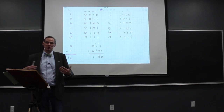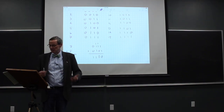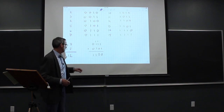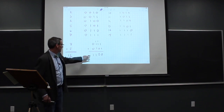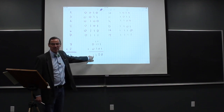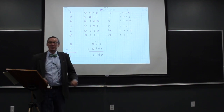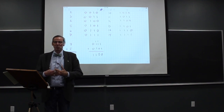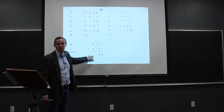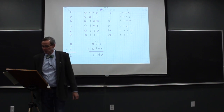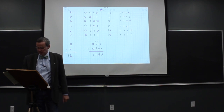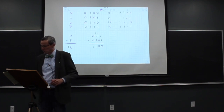We can also represent negative numbers. We take the most significant bit — the highest one — and instead of representing a power of two, we use it to represent the sign: zero means positive, one means negative. We use something called two's complement because it makes addition easier.